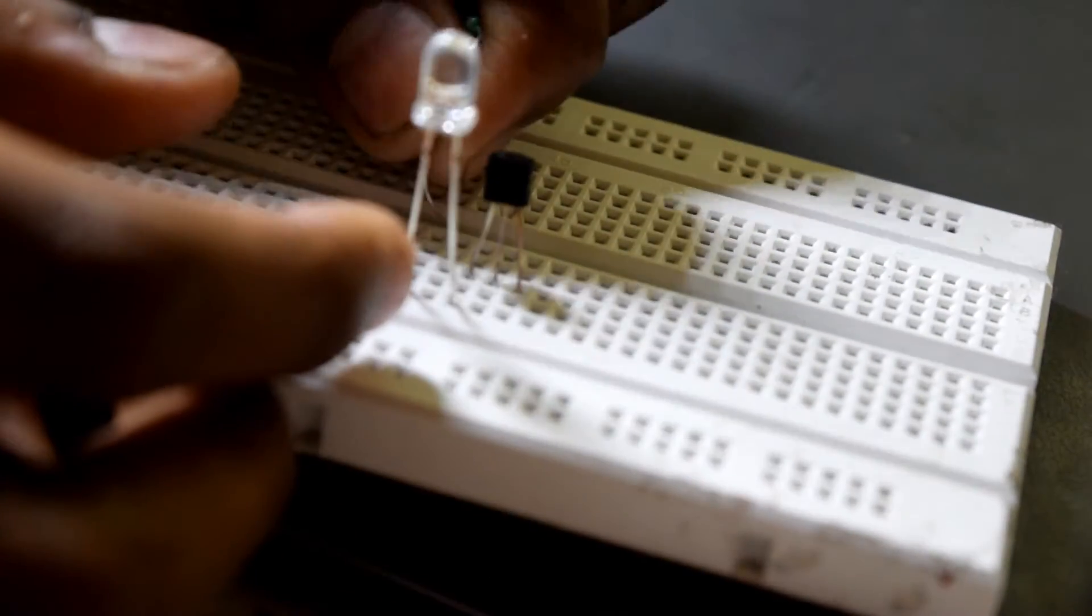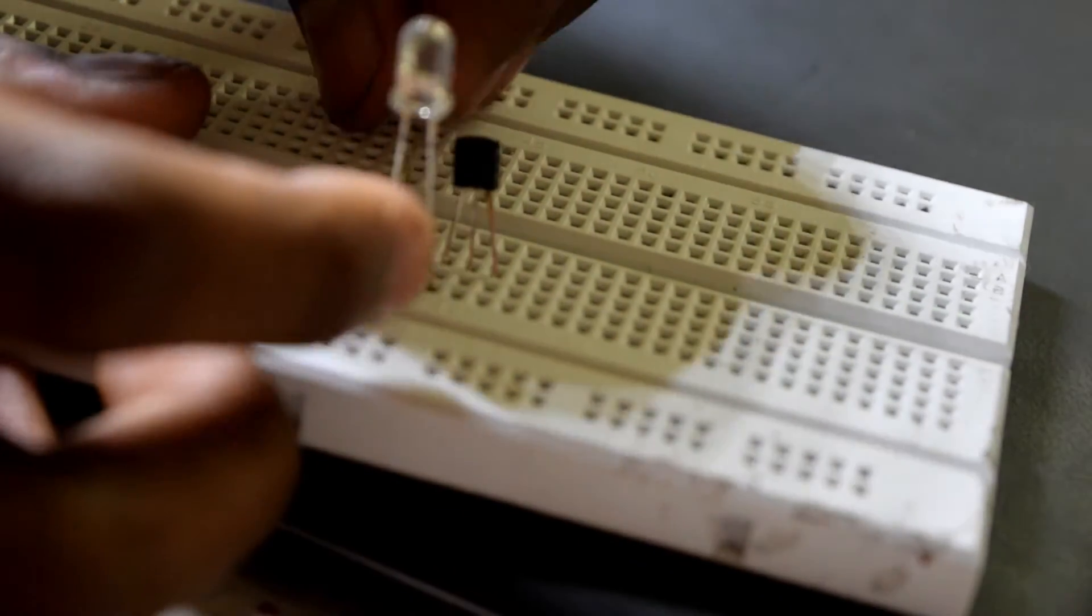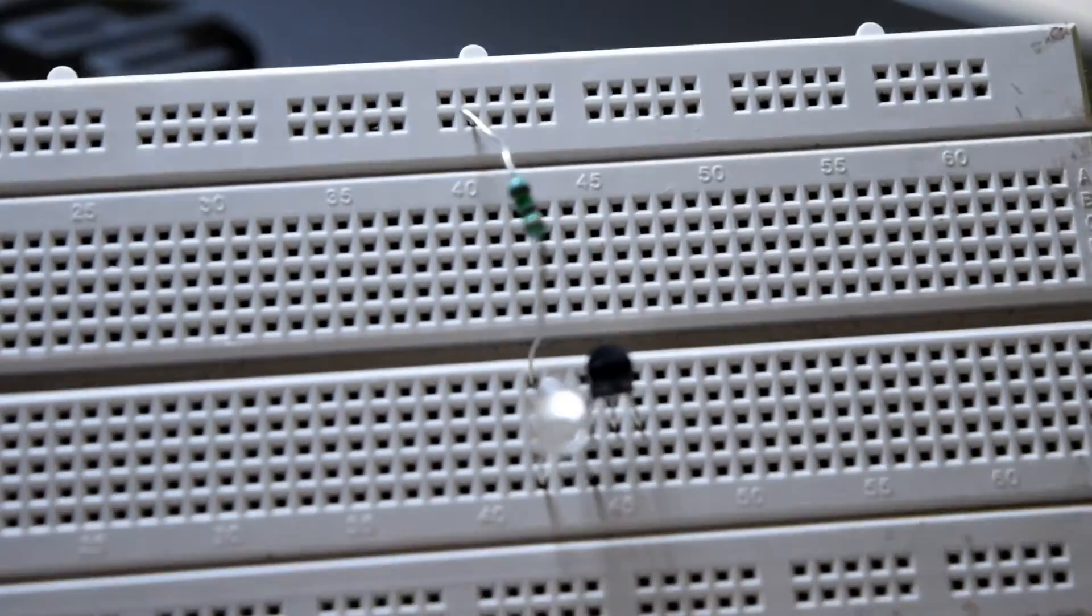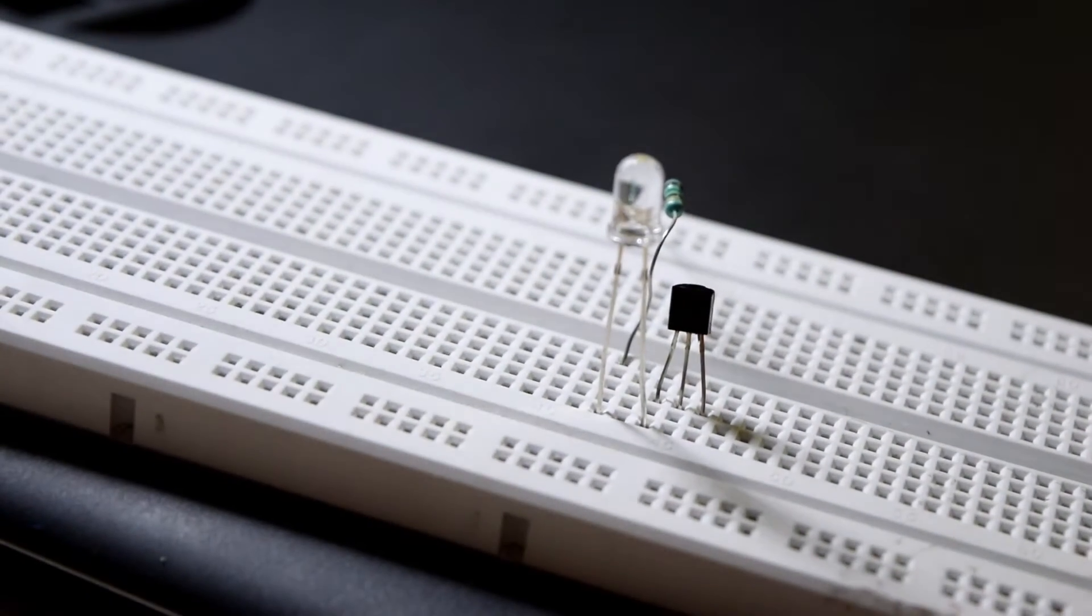So here's the LED. I will give you the clear picture of the breadboard at the end of the video. One pin here and the other way, positive terminal to the positive rail. We are using the resistor.